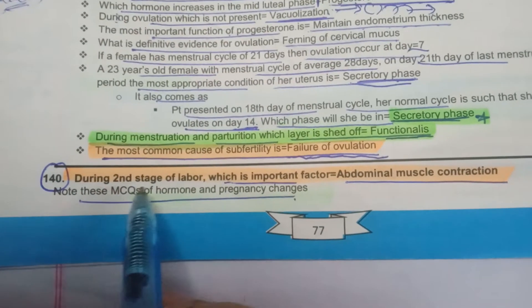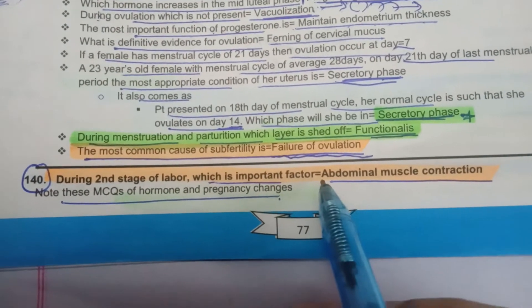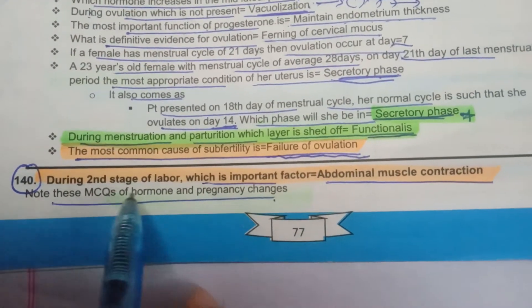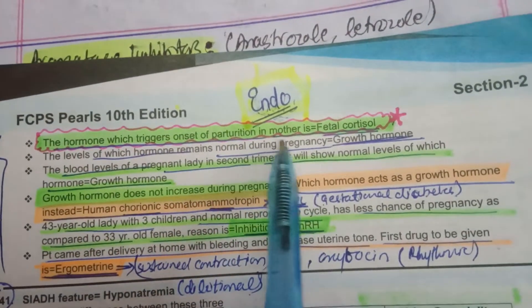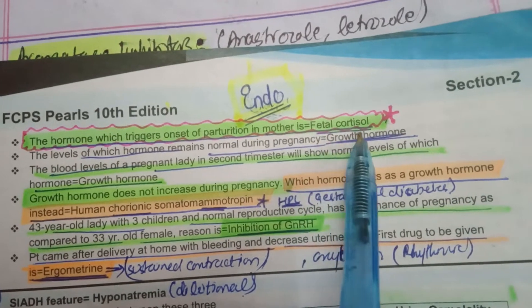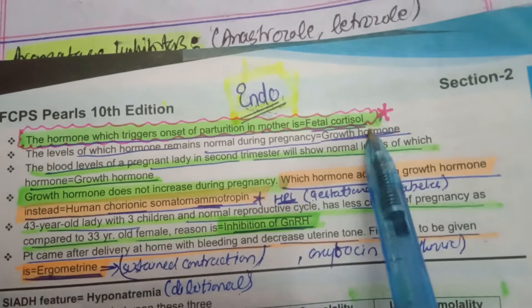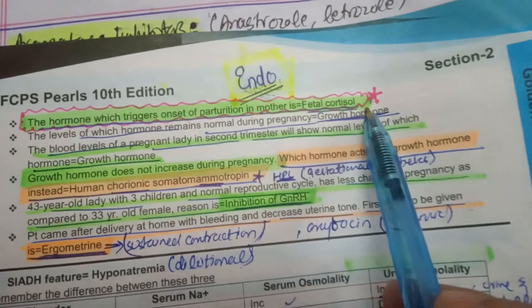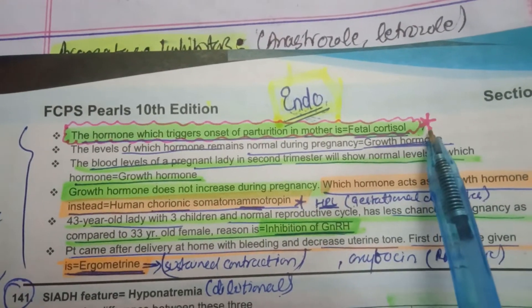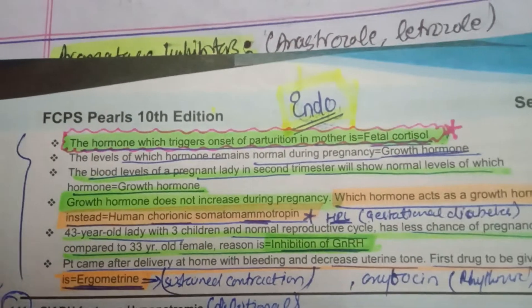During the second stage of labor, the important factor is abdominal muscle contraction — the maternal push. The hormone that triggers the onset of parturition in the mother is fetal cortisol — it plays a very important role, causing all the signals for the start of the birth process. This MCQ has appeared repeatedly, so keep it in mind.